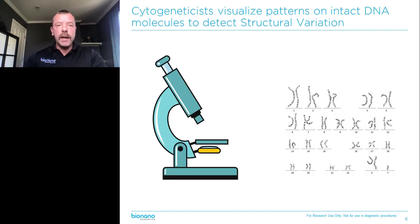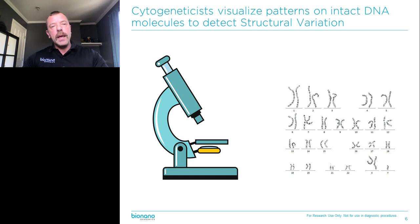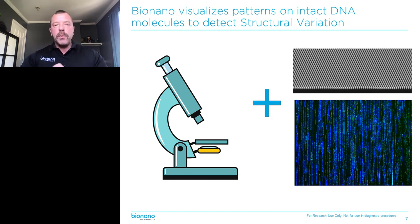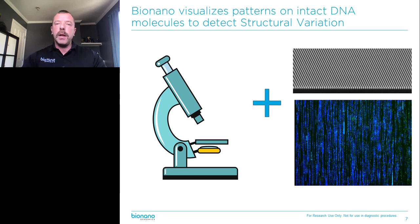That is why karyotyping is still the standard of care for large structural variation. The reason it's such a robust technology is because it visualizes patterns on intact DNA molecules and looks at changes in those patterns to identify rearrangements of the genome. That's really what BioNano does as well — but instead of a karyotype, we use nanochannel arrays to massively parallelize, linearize extremely long DNA molecules, megabases in length, and then we place more patterns on these molecules.